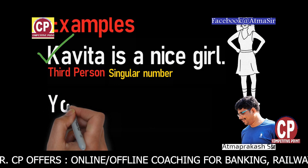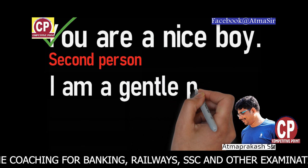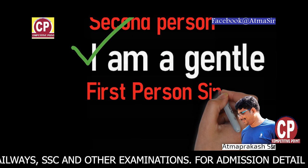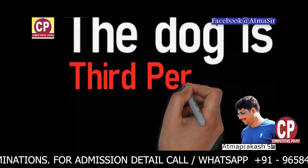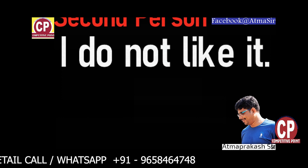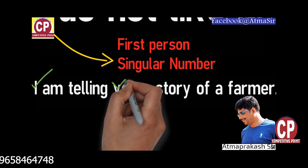In the sentence 'You are a nice boy', you is not the first person — it is the second person. Similarly, in the sentence 'I am a gentle person', the subject I refers to itself. Hence, the subject I is the first person, but singular in number. 'The dog is barking' — the dog is the third person. 'You are shouting' — you is the second person. 'I do not like it' — I is first person, singular number. In 'I am telling you a story about a farmer', I is the first person, you is the second person, and a farmer is the third person.